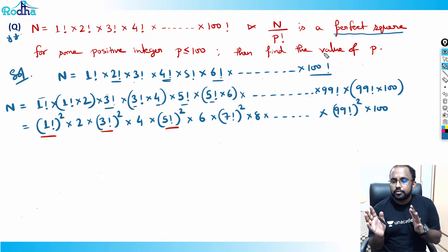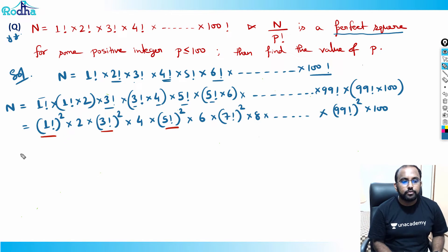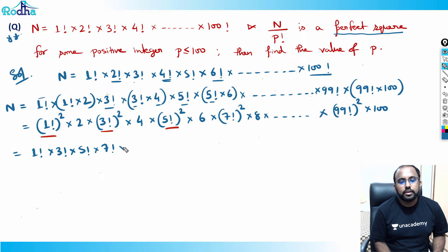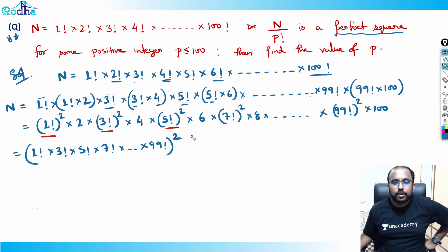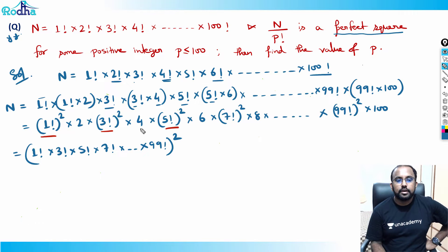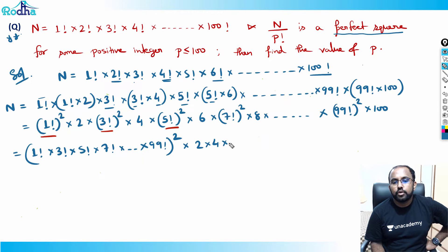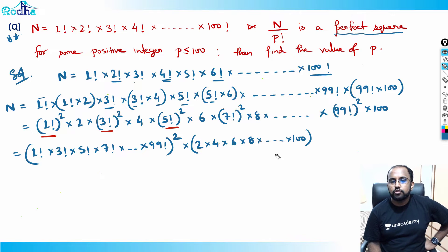Since this is a perfect square, let's arrange. We can write: 1 factorial into 3 factorial into 5 factorial into 7 factorial till 99 factorial — all the odd factorials — raised to the square. And what we're left with is 2 into 4 into 6 into 8 till 100.